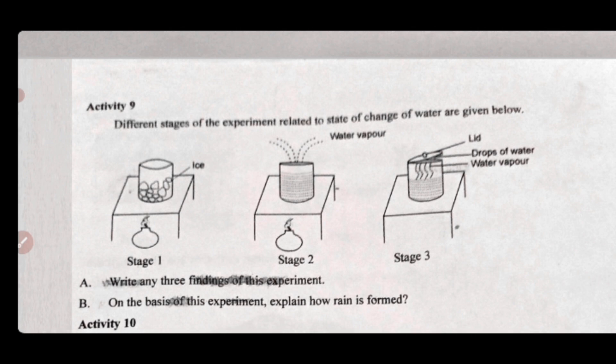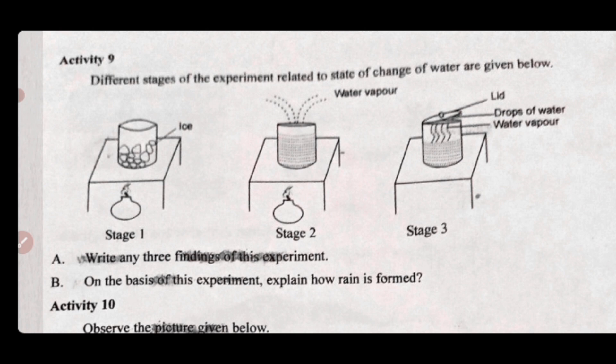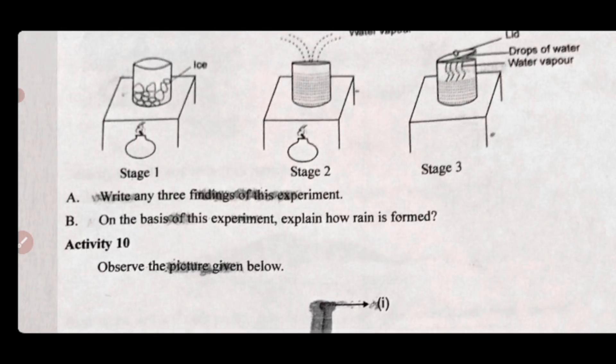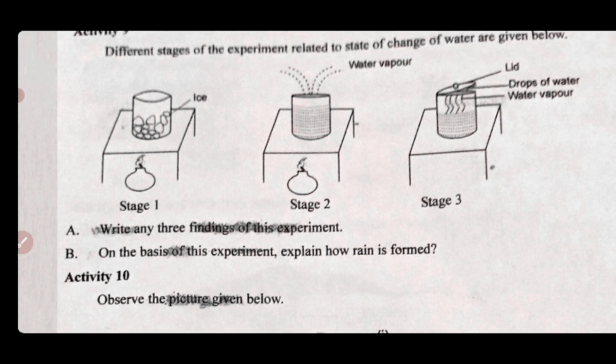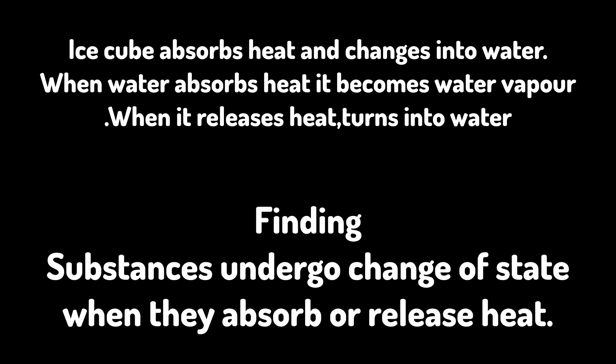Activity Nine: different stages of an experiment related to the state of change of water are given. Stage one uses ice. We boil it and add water vapour, then add a lid and cool it. Findings: the ice cube absorbs heat and changes into water. When water absorbs heat, it becomes water vapour. When it releases heat, it turns back into water. Substances undergo a change of state when they absorb or release heat.